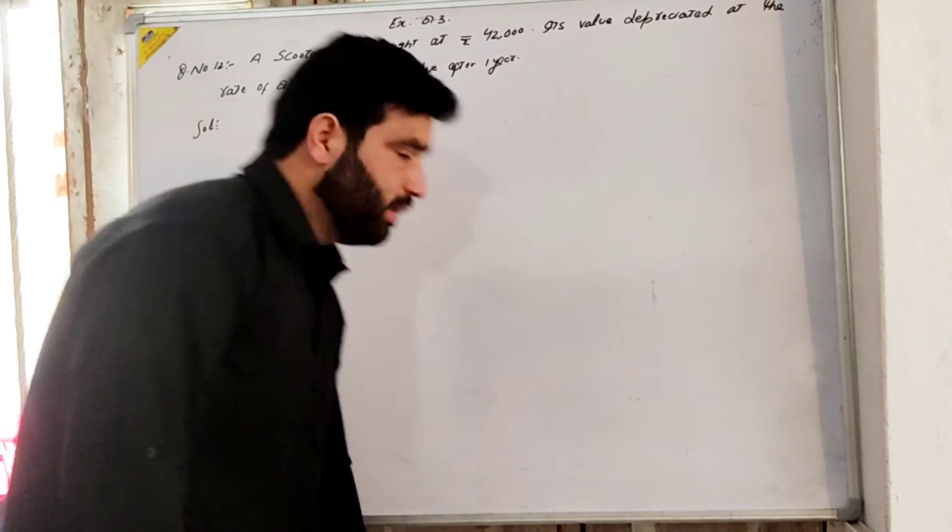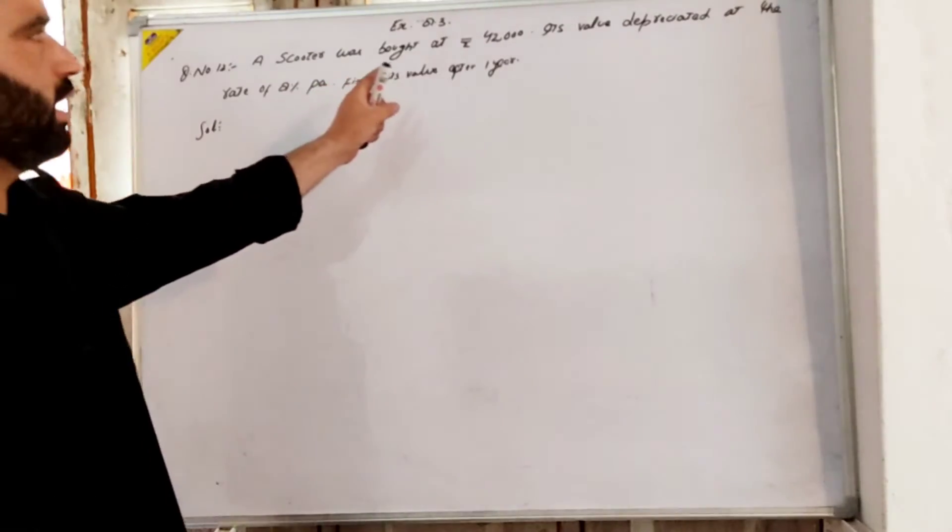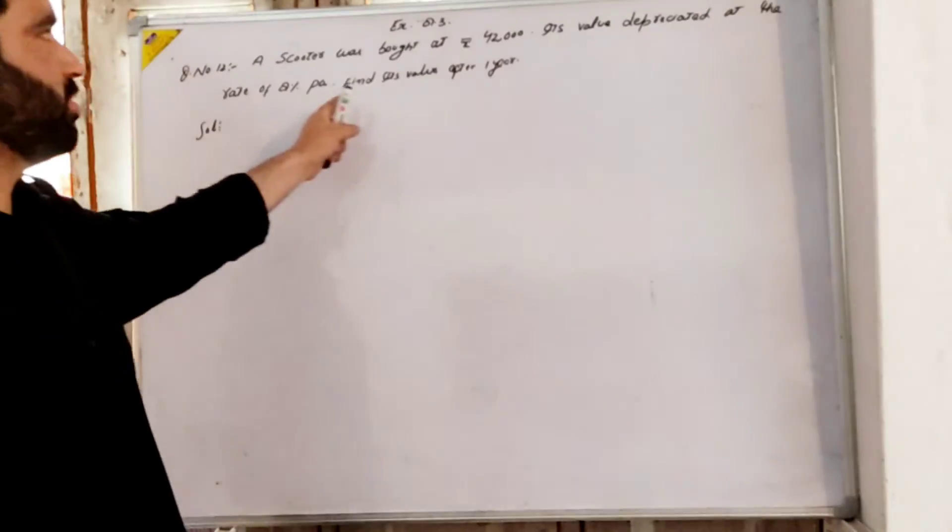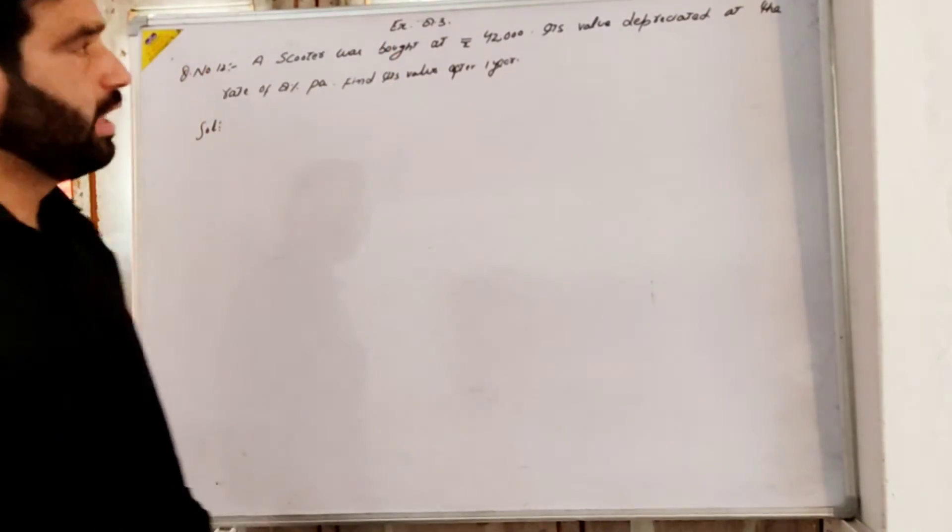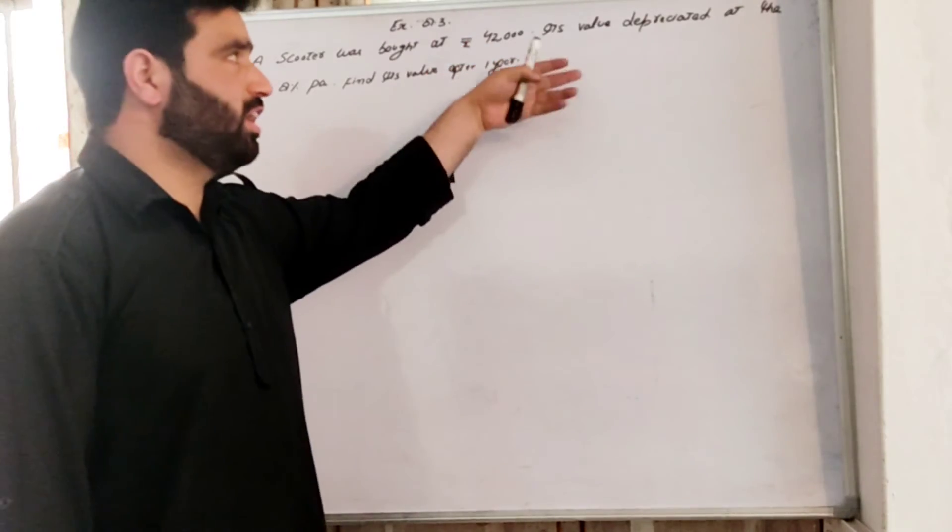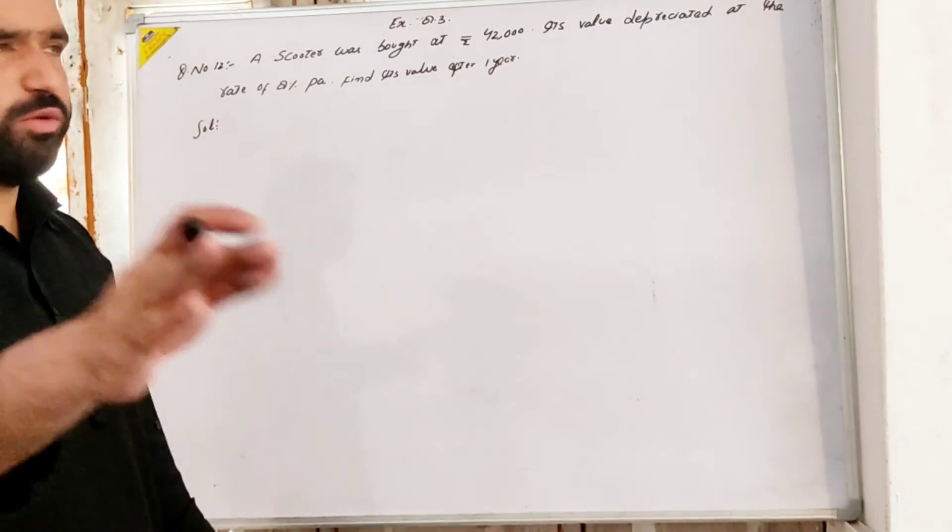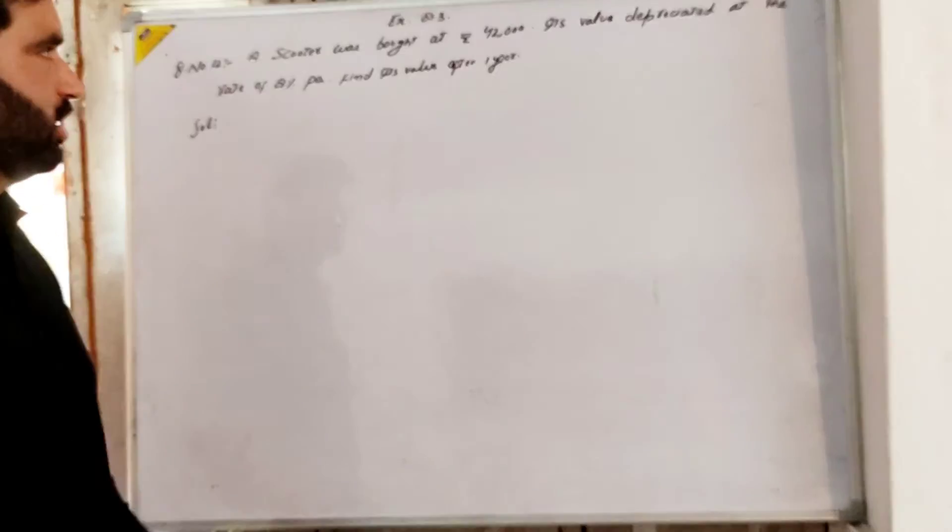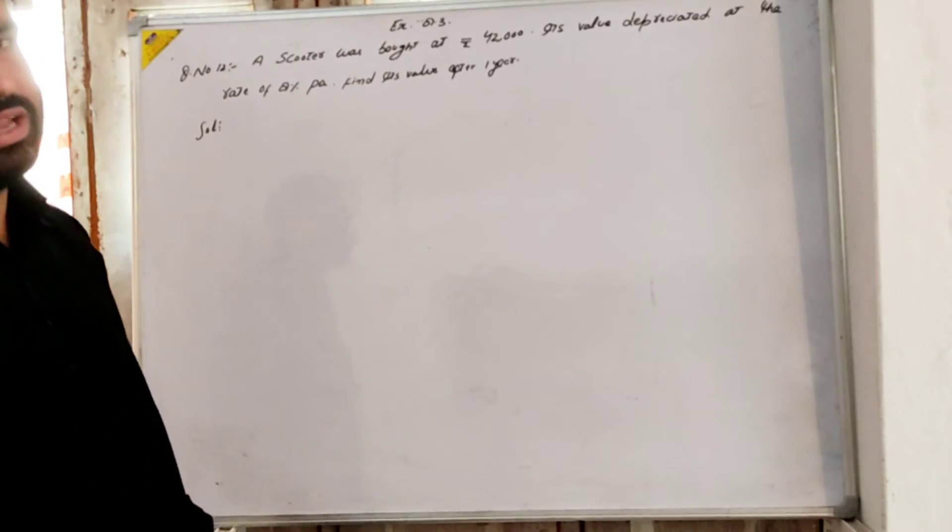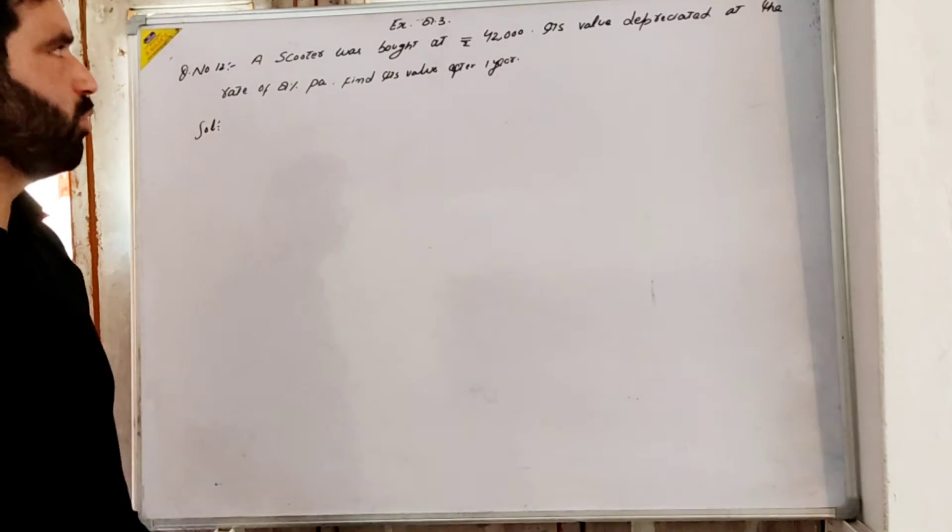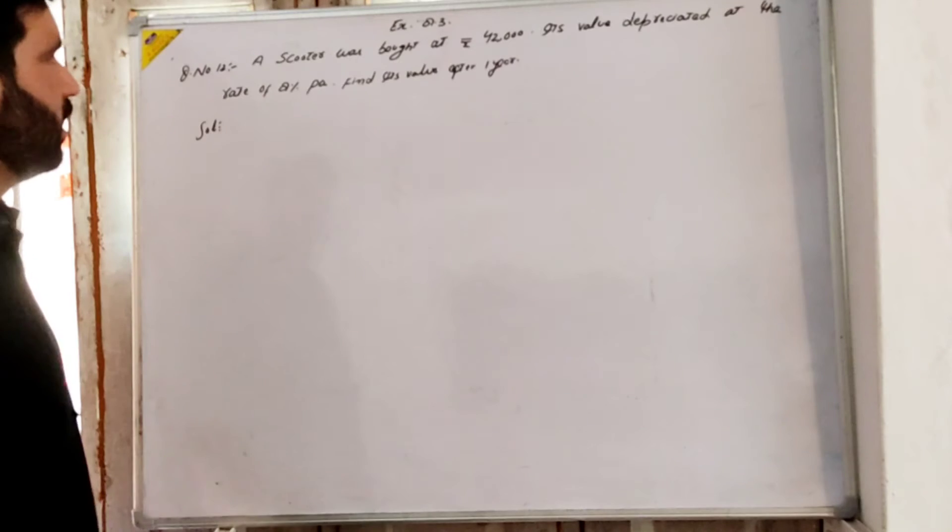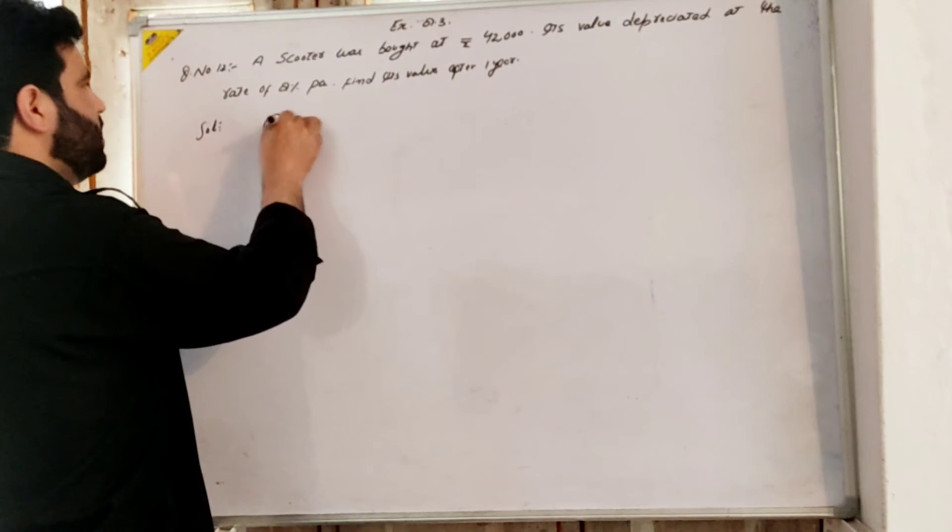Next, the last question. A scooter was bought at rupees 42,000. Its value depreciated at a rate of 8% per annum. Find its value after one year. Depreciation means the value decreases. The depreciation rate is 8% per annum.